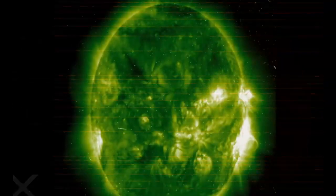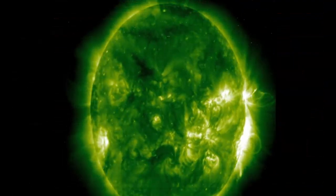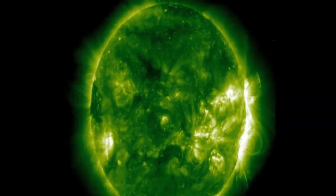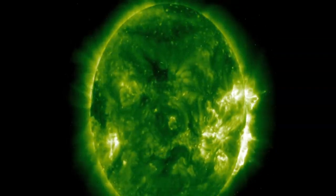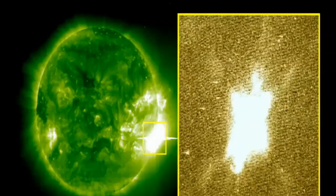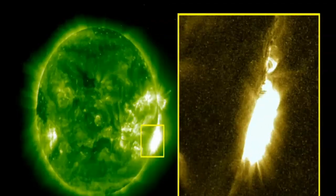The most powerful flare on record was in 2003 during the last solar maximum. It was so powerful that it overloaded the sensors measuring it. They cut out at X17 and the flare was later estimated to be about X45.